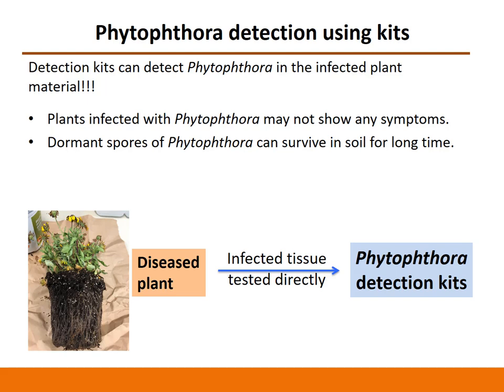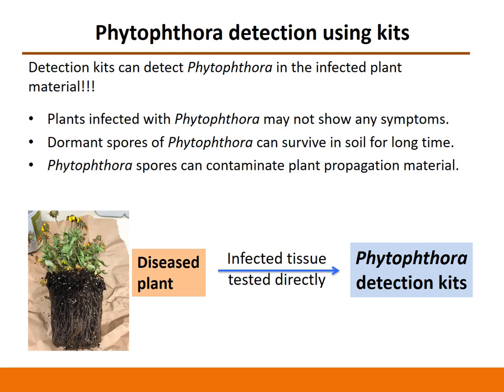Any delay in the detection of Phytophthora due to lack of symptoms can cause huge economic losses to growers. Phytophthora can also produce dormant spores. These spores can survive without a host in soil for a long time and can contaminate the materials and supplies used for plant production. It is therefore important to test these materials for Phytophthora contamination, but you cannot use the available detection kits directly to test the contamination. So how can you test these propagation materials?